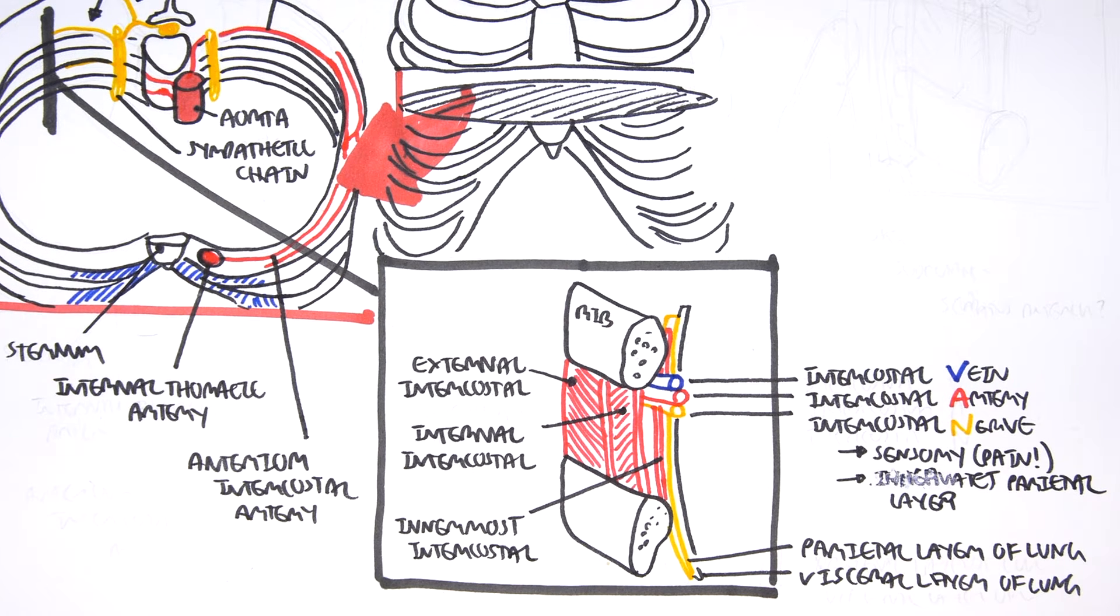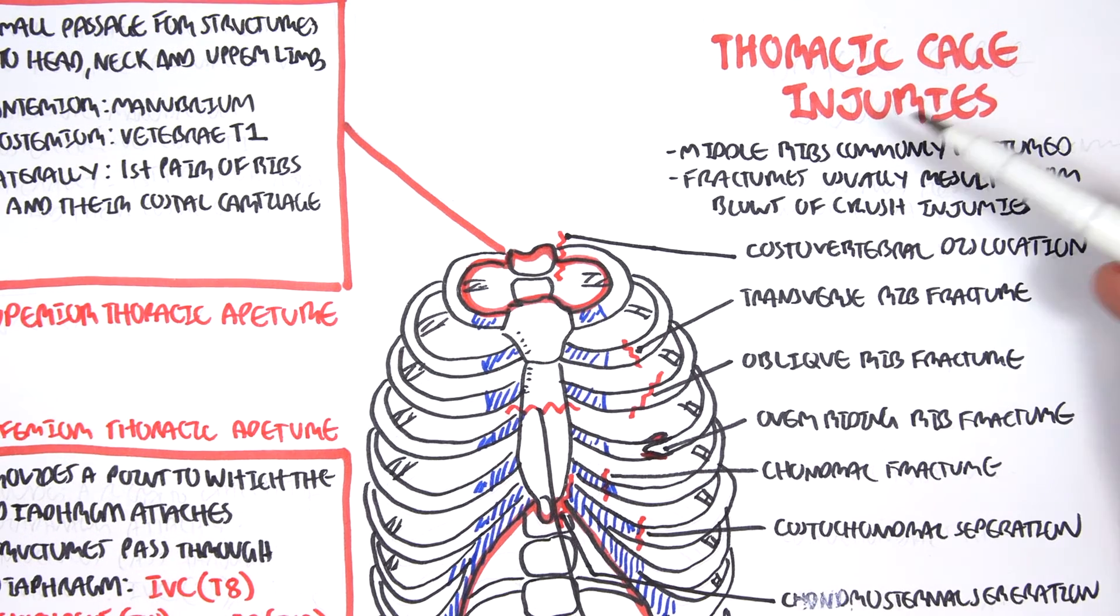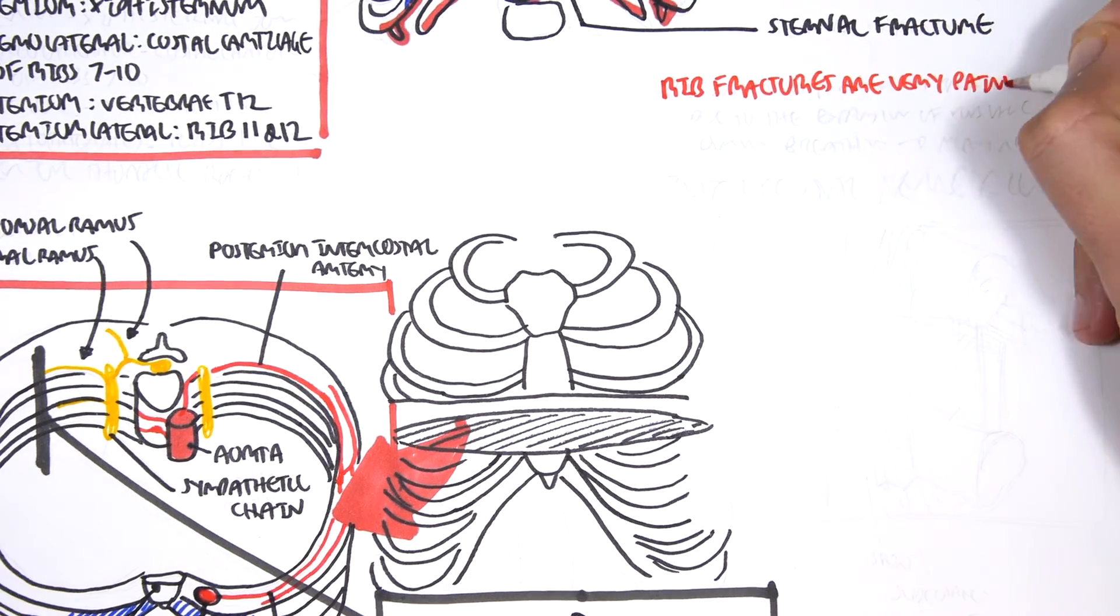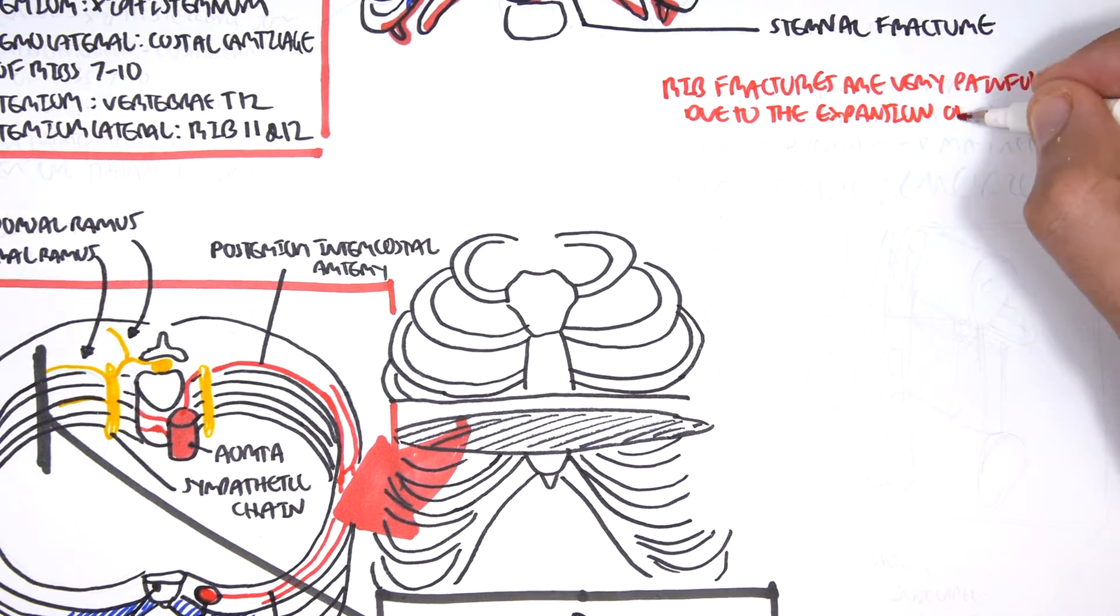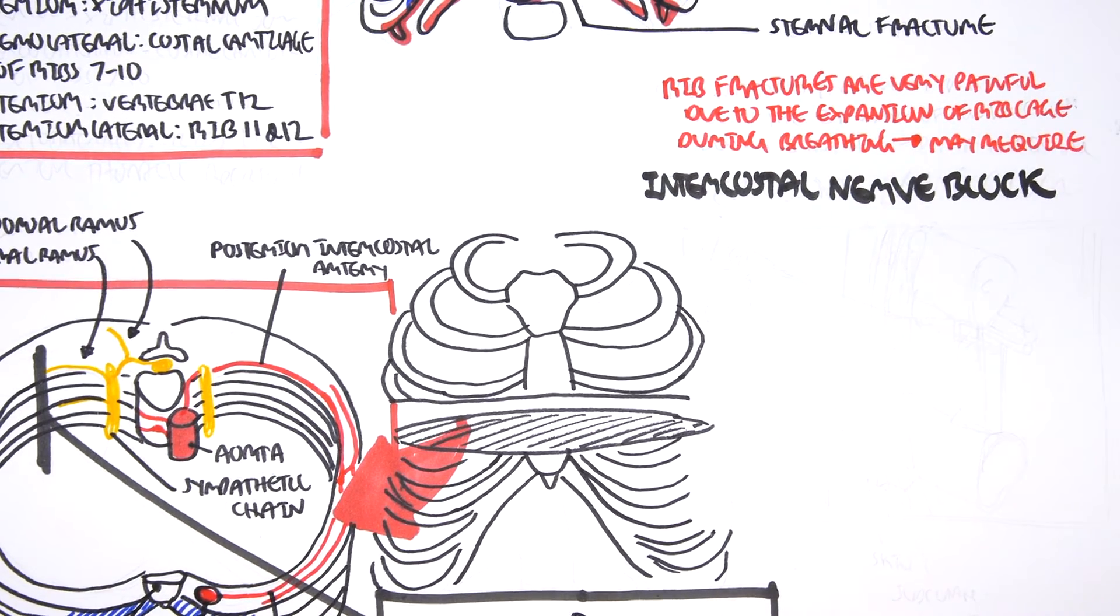So that is why the intercostal nerve is important. So going back to the rib fractures, remember all these rib fractures we're talking about? Well, they are very painful because the intercostal nerves are sending pain signals to the brain. So that is why in the treatment for rib fractures, we actually block the intercostal nerves. So rib fractures are very painful due to the expansion of rib cage during breathing. And so we may require an intercostal nerve block.